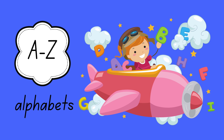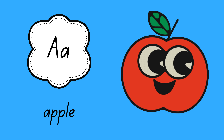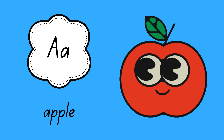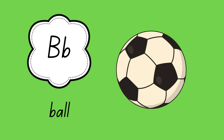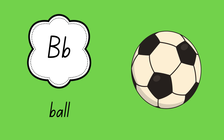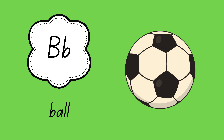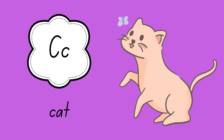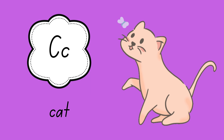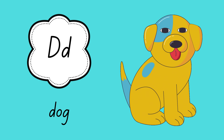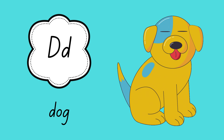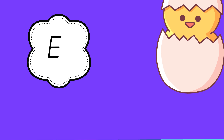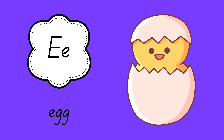Let's learn alphabets. A for apple. B for ball. C for cat. D for dog. E for egg.